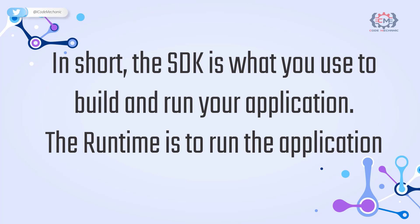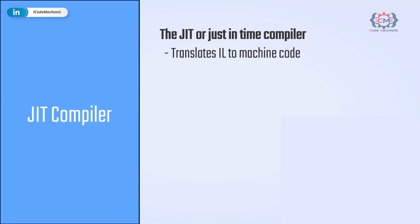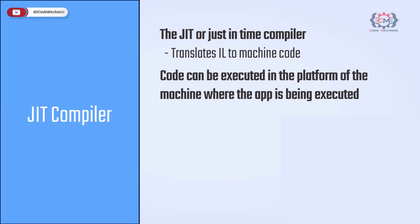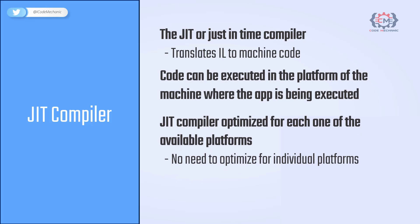In short, the SDK is what you use to build and run your application; the runtime is to run your application. The JIT or just-in-time compiler translates IL to machine code that can be executed on the target platform. The JIT compiler is optimized for each available platform, making it easier for developers as they do not need to optimize specifically for each platform. This is one of the main reasons how .NET lets us write once and run everywhere.